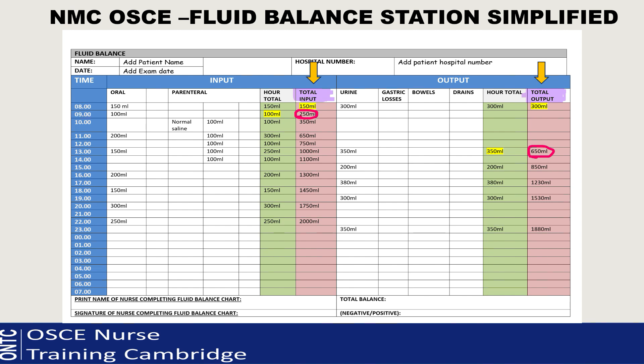Apply the same cumulative principle on the output side. At 8 o'clock they passed 350ml. By the time you come to 13:00, the total output is 300ml from the 13:00 box plus 350ml from the 8 o'clock box - so the running total is 650ml. Go all the way down until your last output and all the way down until your last intake, then stop. You don't need to go any further than that.